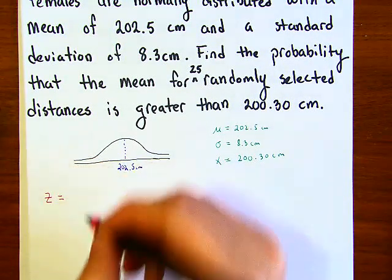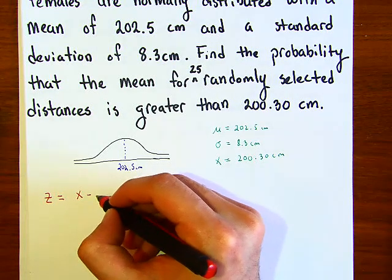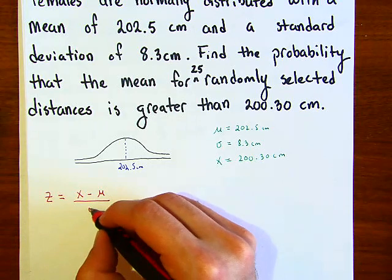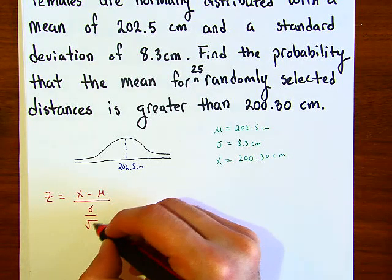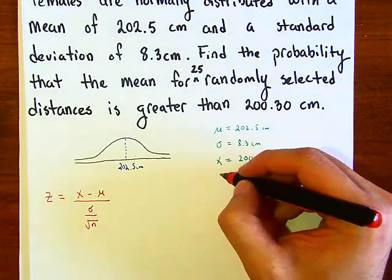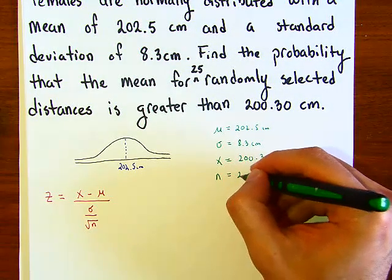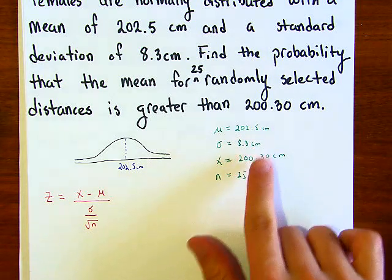And here our n value is 25. So what we're going to do is plug in these values to calculate the z value, and then we're going to calculate which distances are greater.